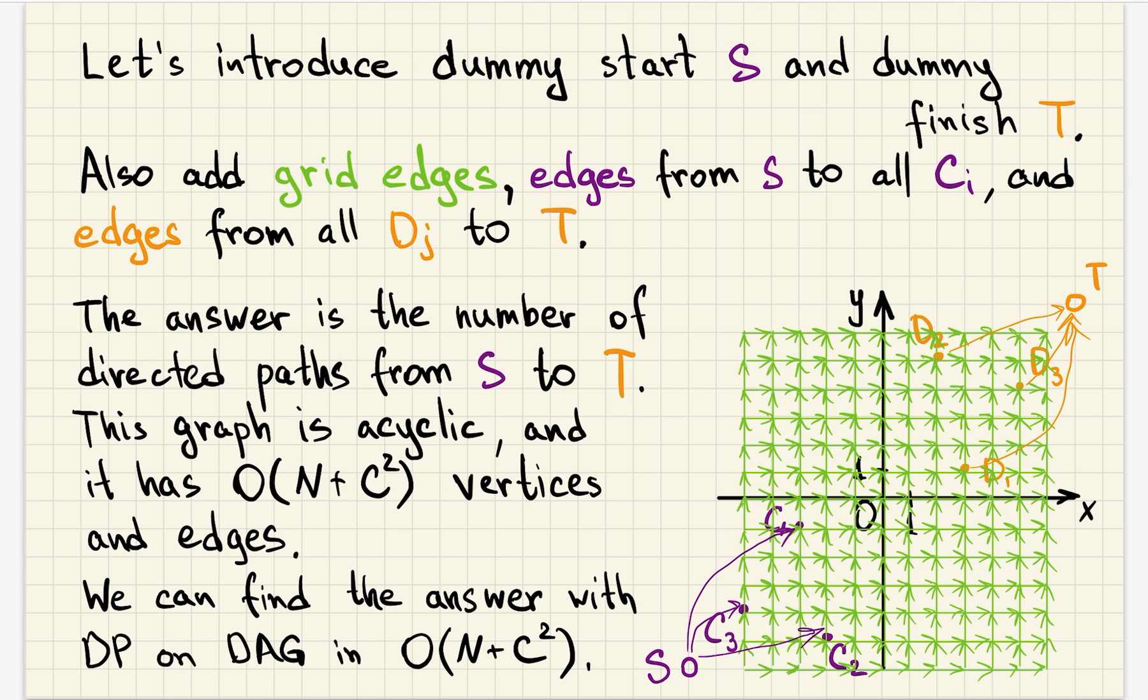And after we calculate that for every point, there will be the number of ways to arrive at it. But that means choosing some start and then moving up and right from it. That means that among other points, this DP will be calculated for our points d_j. And we just take the sum of DP values in these points. And that will be the answer.